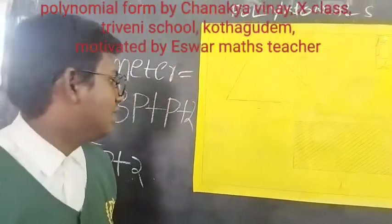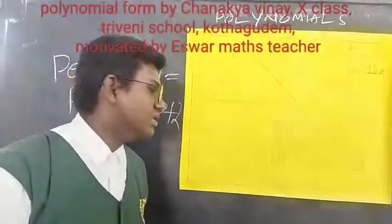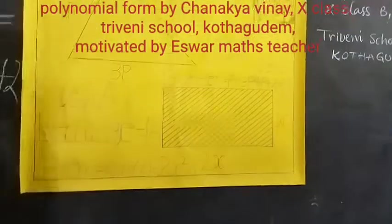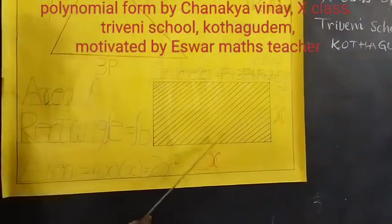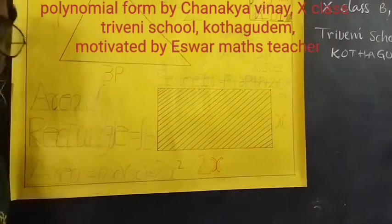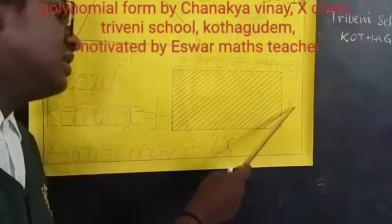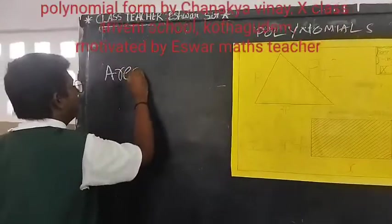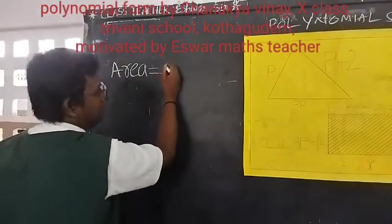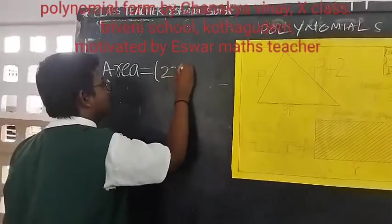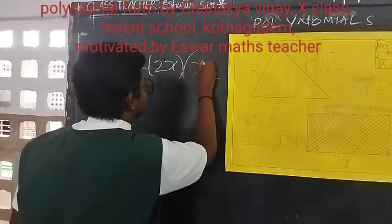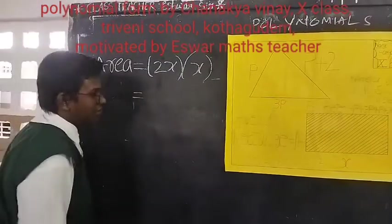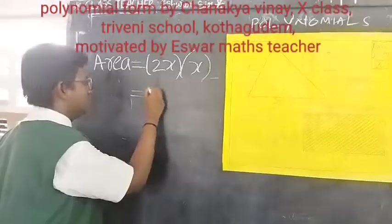The second example is the area of a rectangle. We know that the area of a rectangle is length into breadth. In this rectangle, the breadth is x and the length is twice the breadth, so it is 2x. The product of these two measurements is 2x squared.